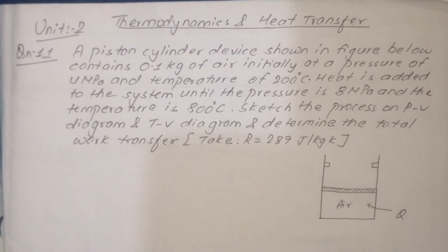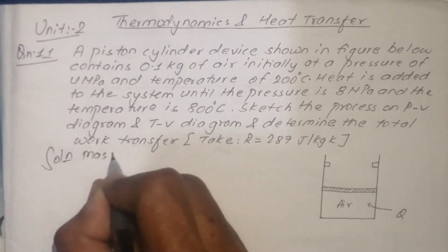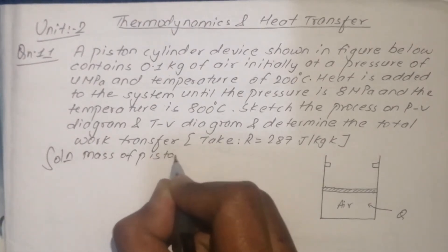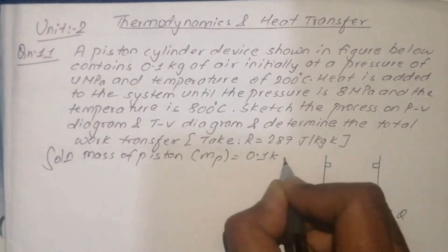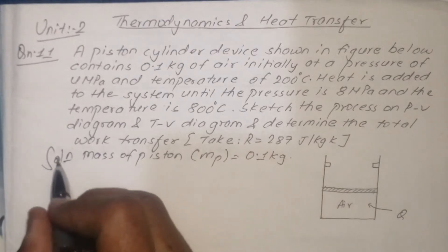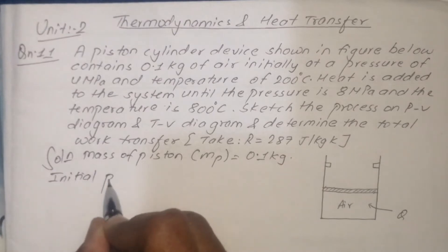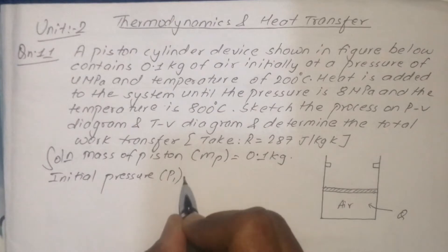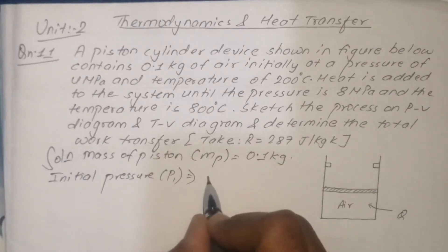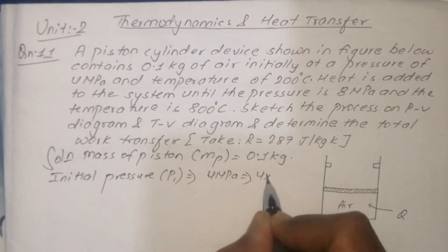In the solution, the mass of the piston is given. The formula is applied. The mass is 1.1 kg. The initial pressure is written down. Initial pressure is 4 mega pascal, which equals 4 into 10 to the power 6 pascal.